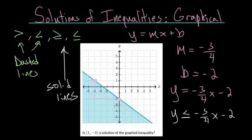So, to determine if our point is a solution, we just need to graph this point. Let's find it at (1, -4). Here's 1 and go down to negative 4, which is right there. And since it's in this shaded region, this is a solution of this graphed inequality. So the answer to this is yes.